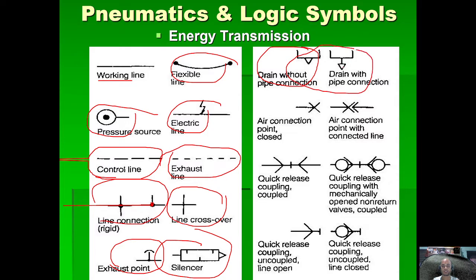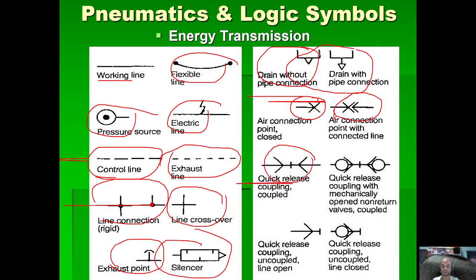We have drain symbols — with connection pipe and without pipe. There is an air connection point where you can connect a nozzle or another hose for extension. We also have a quick release coupling and a quick release coupling with mechanically open non-return valves, as well as a quick release coupling with uncoupled line closed.